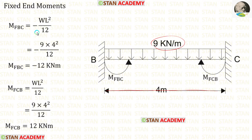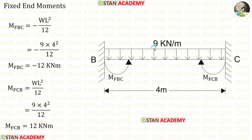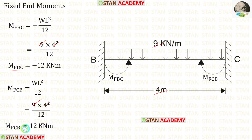The formulas for the fixed end moments are minus WL² upon 12 and positive WL² upon 12. Here W is 9 and L is 4. When we apply the values inside the formulas, we get M_BC and M_CB.